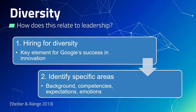Secondly, Google identifies specific areas of diversity that promote innovation in their teams — some of those are background, competencies, expectations, and emotions. As a leadership behaviour, identifying specific diversity traits and hiring for them would enhance the creativity of thinking in your teams and result in enhanced innovation. As an example, if you are engineering a product and you add an artist, an ergonomics expert and a mix of genders, the realised product would be more likely to appeal to a mix of end users and take into account comfortability of use, aesthetics and potentially different ways to use the product. Should this be left only to engineers, those other aspects may be missed in pursuit of practicality.